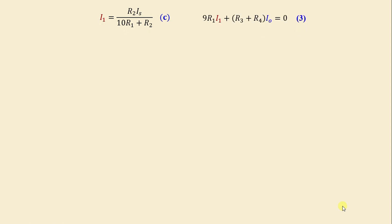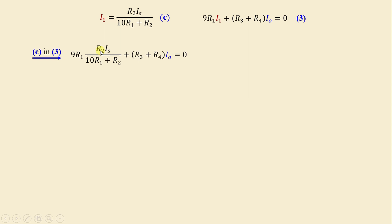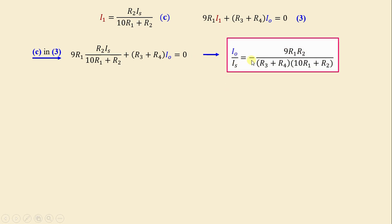We now have I1 expressed in terms of IS. Substituting C into Equation 3 — 9·R1·I1 + (R3 + R4)·IO = 0 — we get: 9·R1·(R2·IS) / (10·R1 + R2) + (R3 + R4)·IO = 0. Therefore, the current gain is: IO / IS = −9·R1·R2 / [(R3 + R4)·(10·R1 + R2)].